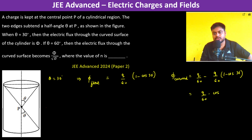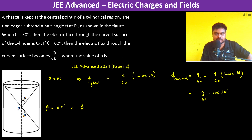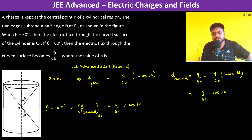The flux through the curved part is the total flux minus the flux through the flat part, which gives Q divided by epsilon naught times cos 30 degrees. Similarly, when theta equals 60 degrees, the flux through the curved part is Q divided by epsilon naught times cos 60 degrees, which equals Q divided by epsilon naught times 1/2. For 30 degrees it is Q divided by epsilon naught times root 3 over 2.